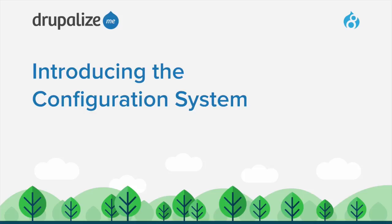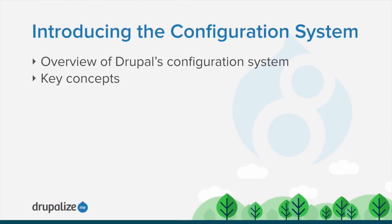Drupal's configuration system helps to solve the problem of moving changes in configuration from development to production. It does this in two ways: by providing a unified way to store configuration, and by providing a process by which configuration changes can be imported and exported between instances of the same site. In this introduction, we'll provide an overview of Drupal's configuration system and key concepts that you should know about.